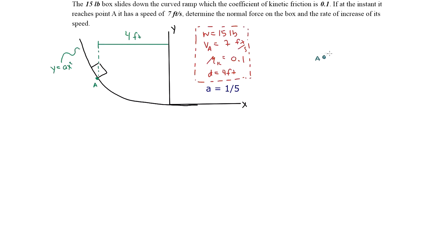Let's draw the forces acting on this particle. Since this is on a surface, there is going to be a normal force perpendicular to the surface, pointing in that general direction. The other force is the weight, since the object has mass. Since the object is moving in this direction, the frictional force points in the opposite direction, tangent to the surface.